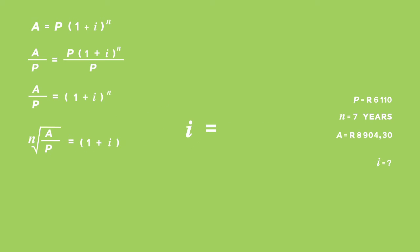Therefore, i is going to be equal to the nth root of A divided by P minus one. Remember, this still needs to be multiplied by 100 to get the percentage value.